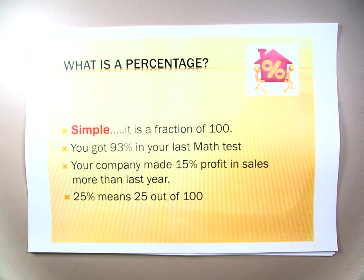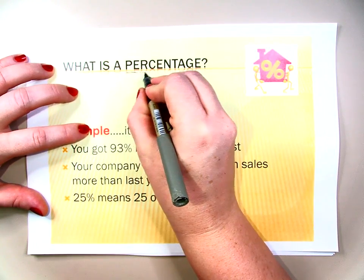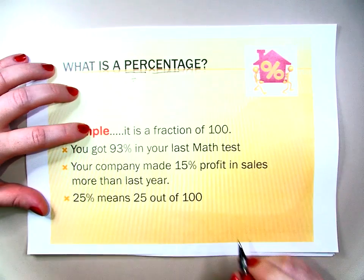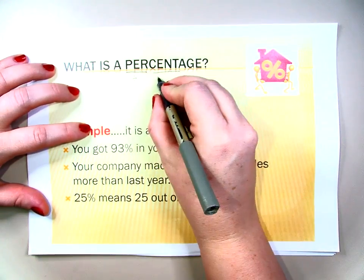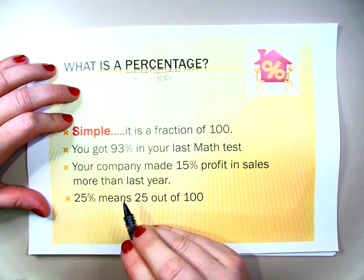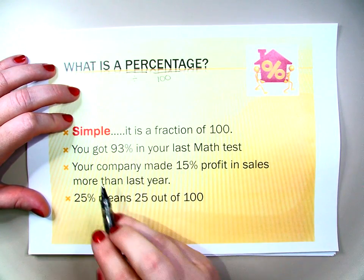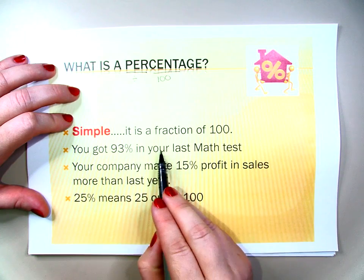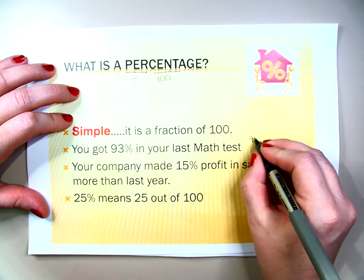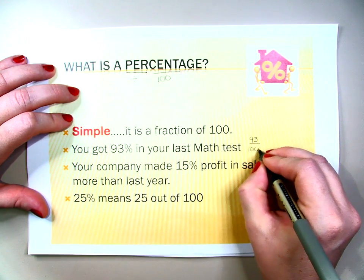So let's start off. What is a percentage? Well, a percentage just means over 100. If we look at 'per cent' — 'per' means division in mathematics, and 'cent' stands for 100. Therefore, it is a fraction or a division of 100. For example, you got 93% in your last math test. Another way we could write this is you got 93 out of 100.